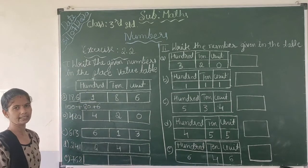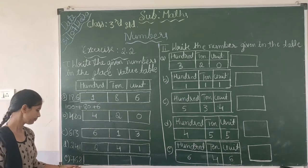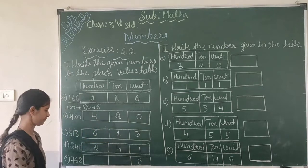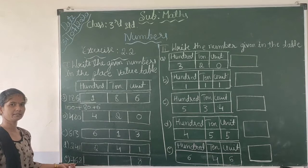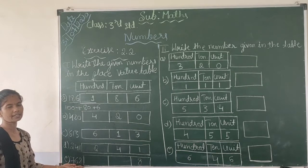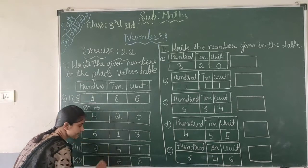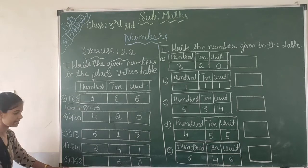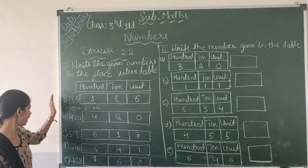Last number: 708. 8 is in which place? It is in the units place. 6 is there — in which place? Wait, 0 is in the 10's place and 7 is in the 100's place. So right here: 8 in units, 0 in tens, 7 in hundreds.